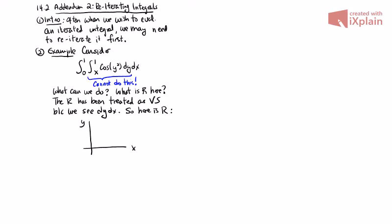So what we've got here is the following: we've got x's to the left and the right of 0 and 1, we've got upper and lower functions y equals 1 and y equals x. So this is our R. This lower function is y equals x, the upper function is y equals 1.